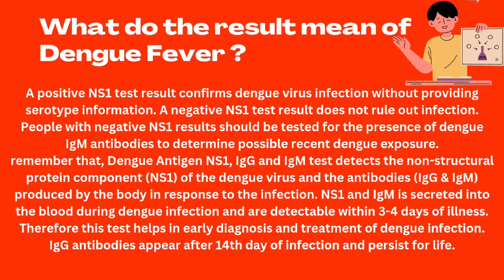The Dengue antigen NS1, IgG and IgM tests detect the non-structural protein component of the Dengue virus and the antibodies IgG and IgM produced by the body in response to the infection. NS1 and IgM are secreted into the blood during the Dengue infection and are detectable within 3–4 days of illness. This test therefore helps in early diagnosis and treatment of Dengue infection. IgG antibodies appear after the 14th day of infection and persist for life.